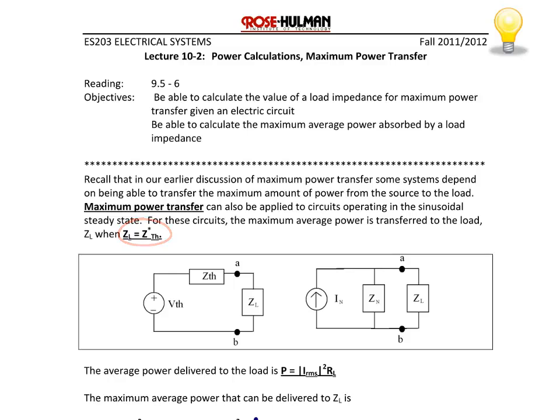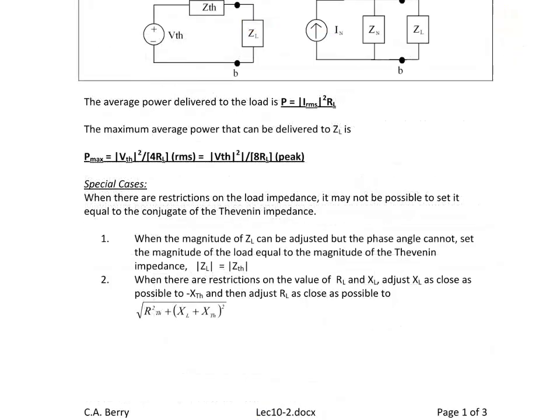The average power delivered to the load can be found using the magnitude of I_RMS squared times R_L. An alternate formula for maximum average power is P_max equals the magnitude of V_Thevenin squared divided by 4R_L when V_Thevenin has an RMS magnitude, or V_Thevenin squared over 8R_L when V_Thevenin is given as a peak magnitude. The difference between these two formulas is one uses RMS, the other uses magnitude or peak.